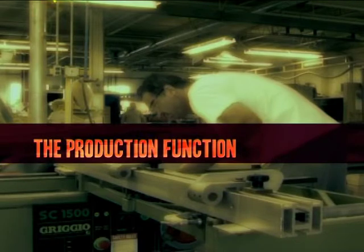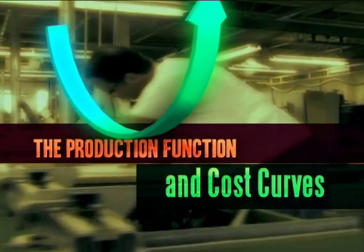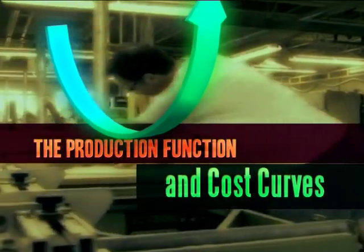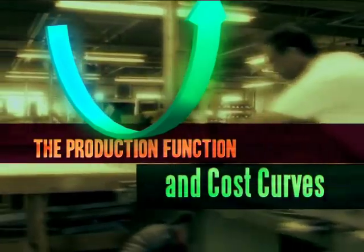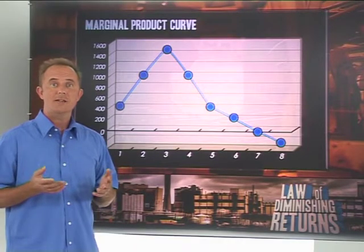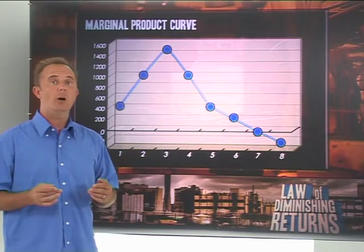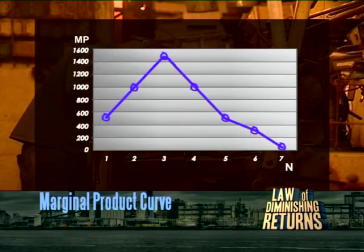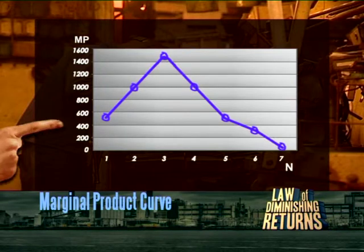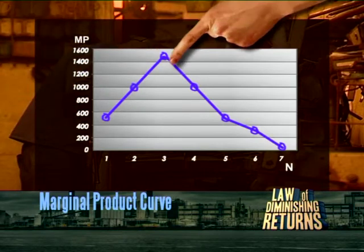The marginal product curve shows the contribution that each additional unit of the variable factor makes to total production. In our case, it shows what each additional worker adds to our output. From the marginal product curve, we can see that the marginal product of labour first increases, reaches a maximum and then decreases.